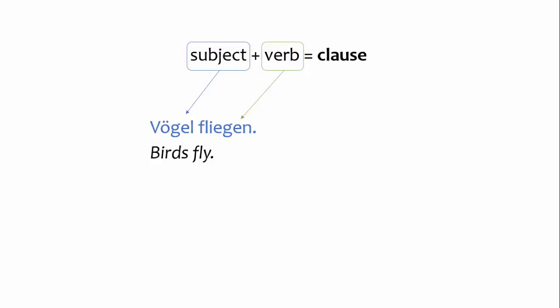German, English, and many other languages use conjunctions to link clauses. At its simplest, a clause is made up of a subject and a verb.